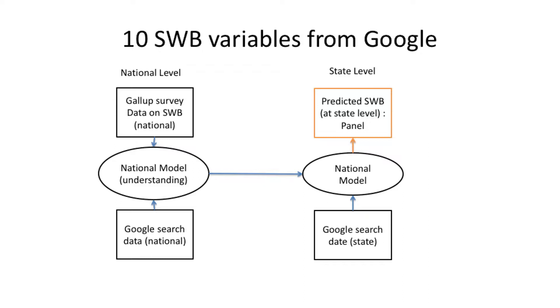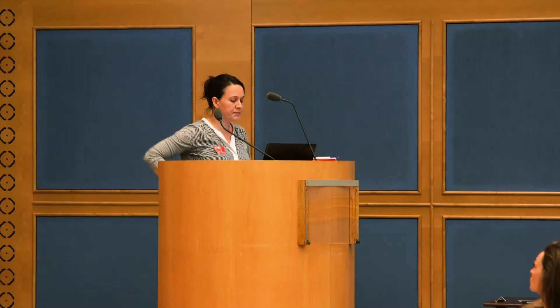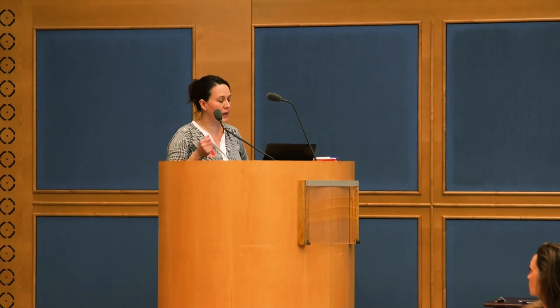How we're getting there is we're starting with the Google Trends data. If you're not familiar with Google Trends, at the top I have two Google Trends series — one is for 'bien-être' in France and the other is for 'well-being' in the United States. It's interesting to see that well-being is much more seasonal in the U.S. than in France. We're going to use the variations in those search volumes and try to match them to variations in the subjective well-being data from Gallup.